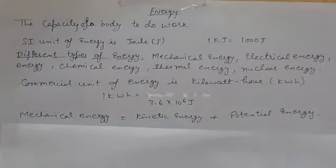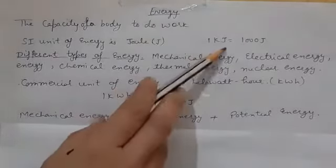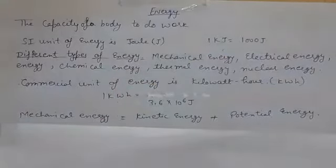The SI unit of energy is joule. One kilojoule is equal to 1000 joules. There are different forms of energy.